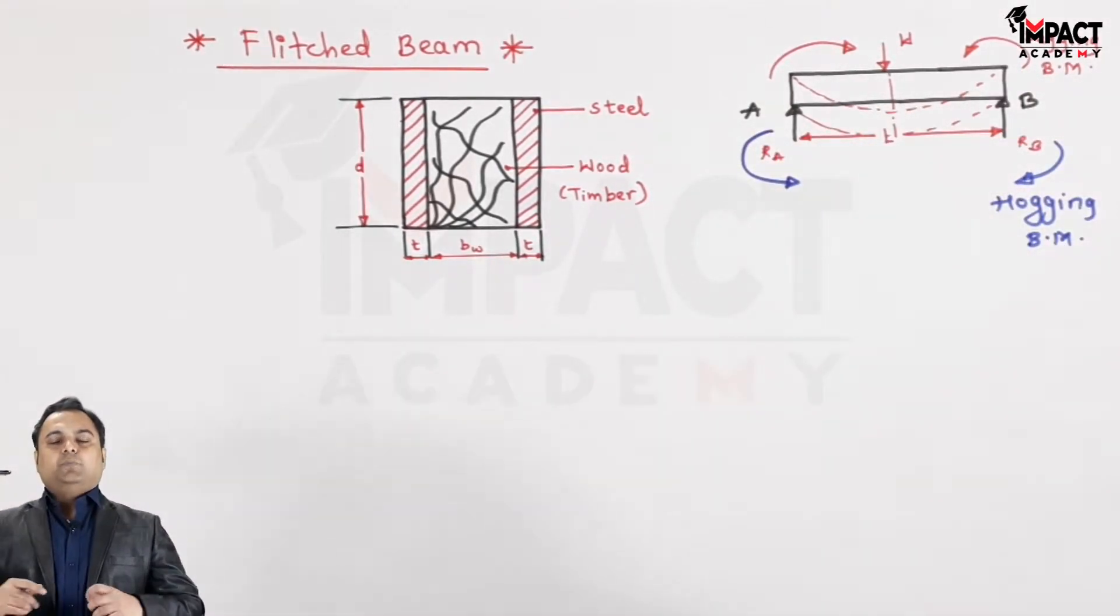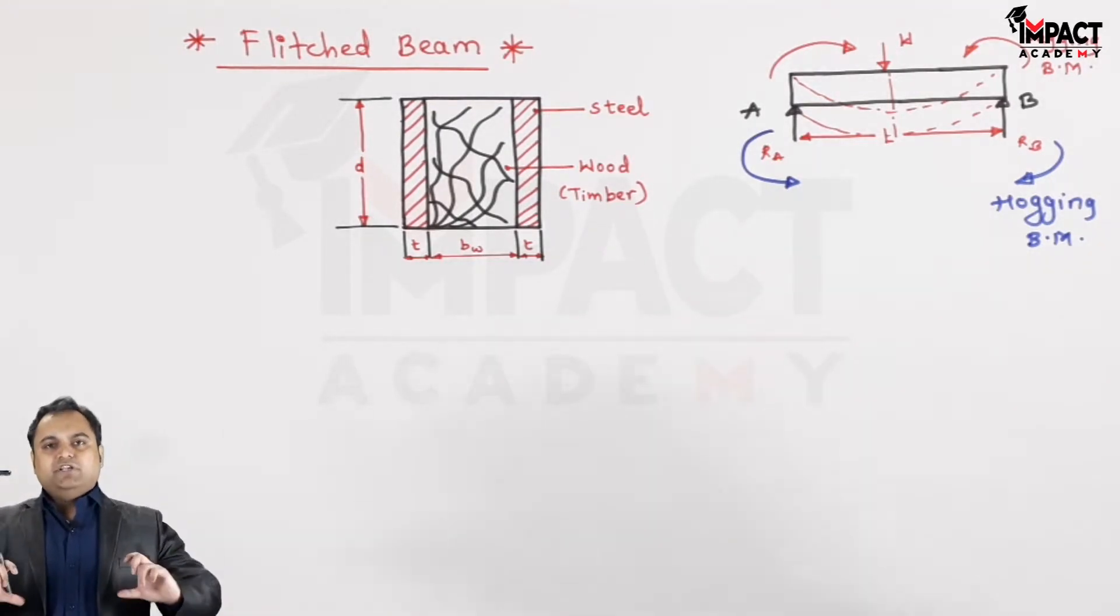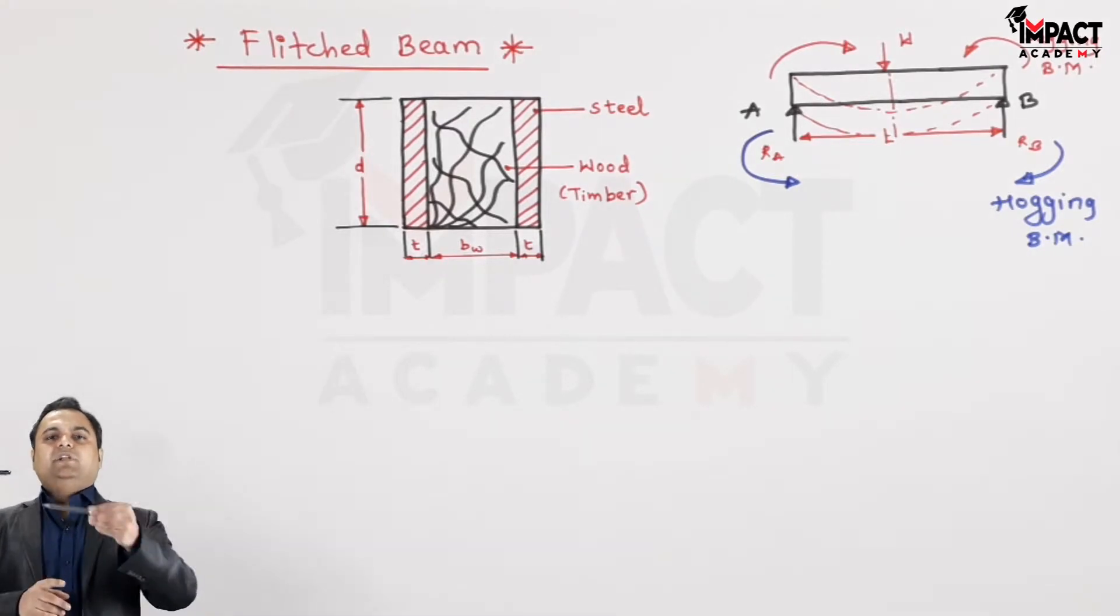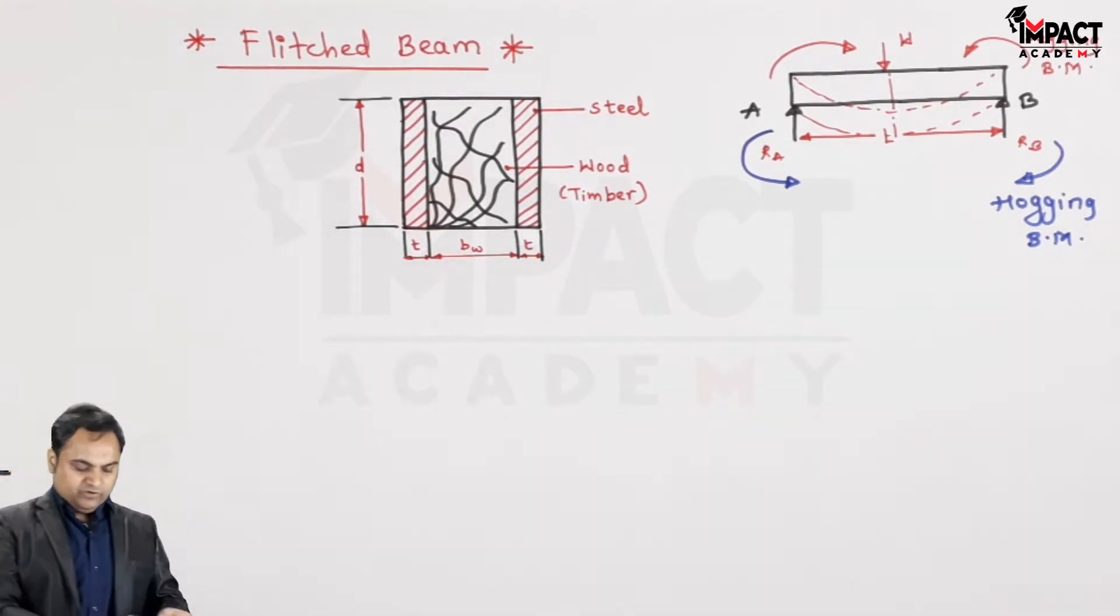So hogging bending moment would be somewhat like this, opposite of the sagging bending moment. Sagging bending moment is trying to bend the beam whereas hogging bending moment is trying to offer the moment from the opposite direction that is it will keep the beam straight. For example, if this is a beam, because of external loading it is bending but the material is such that it will resist that bending